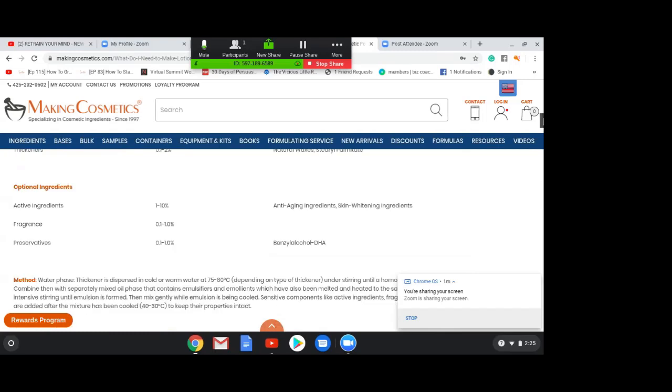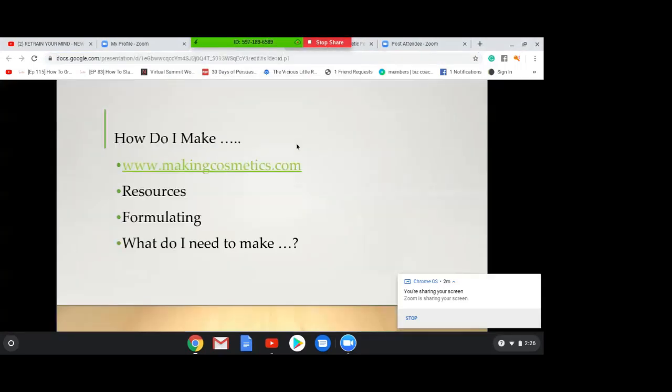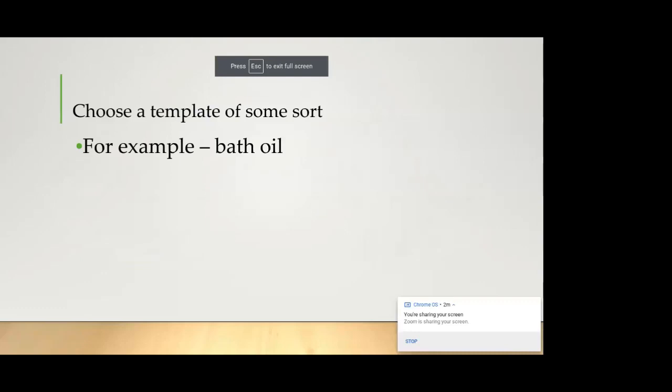So let's go back to my presentation here for a minute. Okay, so we went to makingcosmetics, Resources, Formulating, What Do I Need to Make, right? So we did that and then I would then choose a template of some sort. So the first template we saw when we went to that site was the bath oil template, so that's the template I would choose.